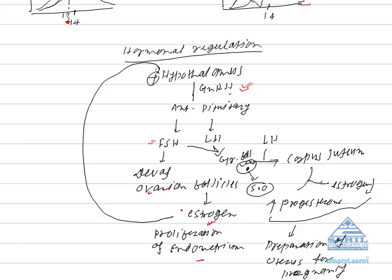Now, estrogen after proliferating the endometrium acts on hypothalamus on 14th day to increase the secretion of GnRH. So, FSH and LH secretion are increased. You can see on 14th day of the cycle both FSH and LH secretion is increased. But because Graafian follicle has more receptors for LH, LH secretion is more than the FSH secretion.